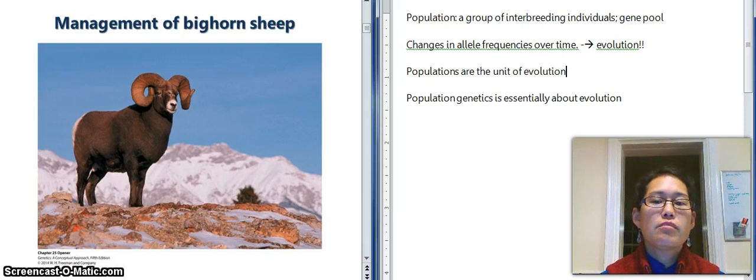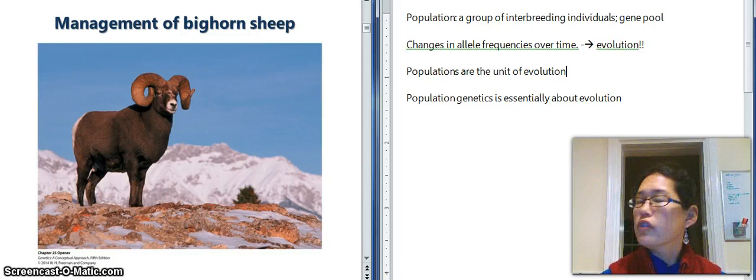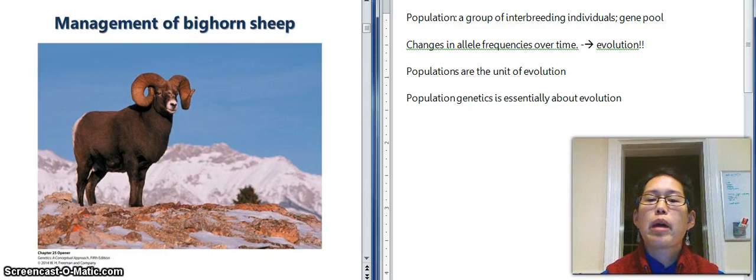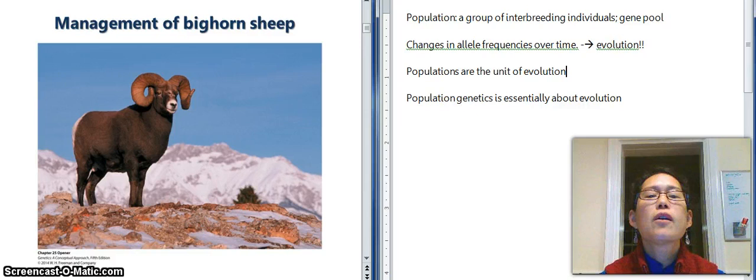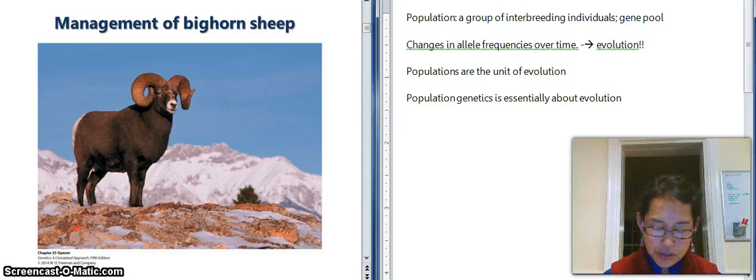Alright, so at the same time, the unit of evolution also is the population. So populations are the unit of evolution. And so individuals don't evolve. Species don't evolve. Populations are the unit of evolution. Populations are technically the only thing that evolves. Okay, so population genetics is fundamentally about evolution.